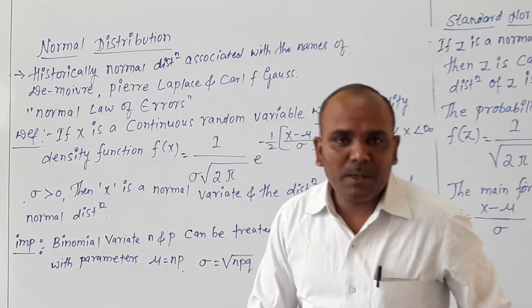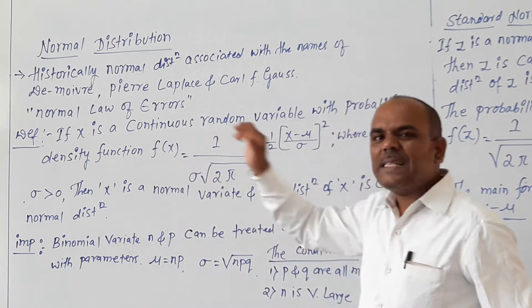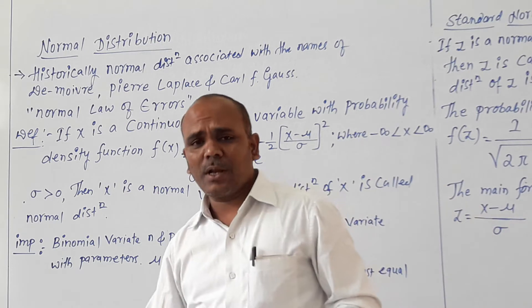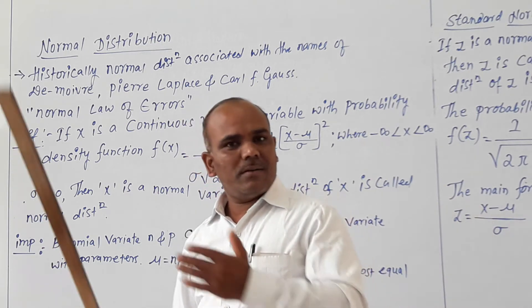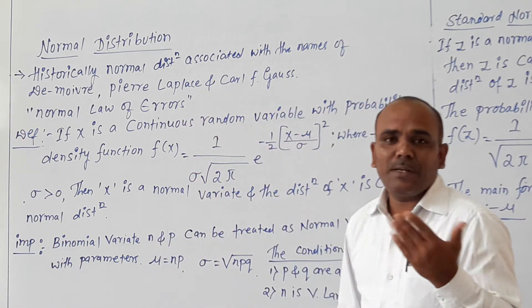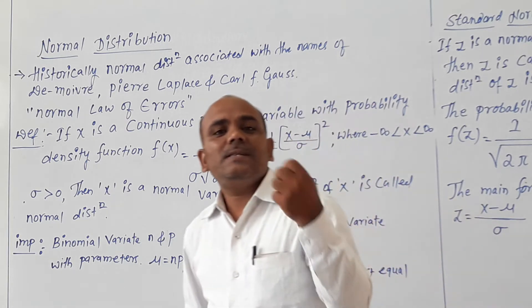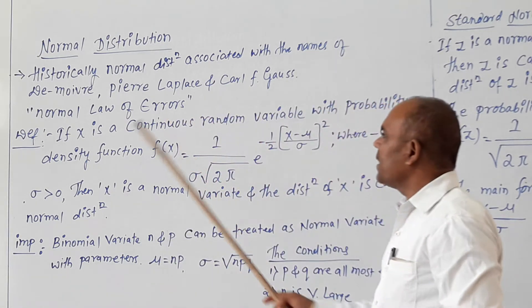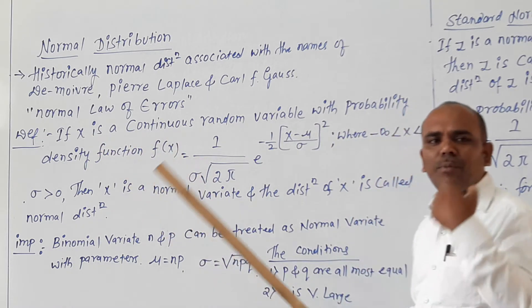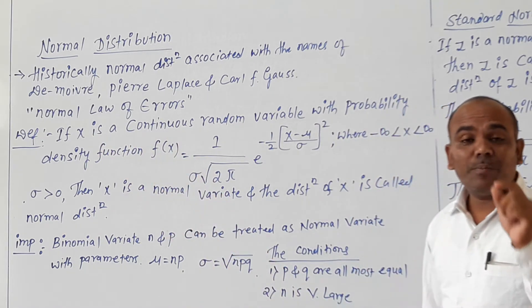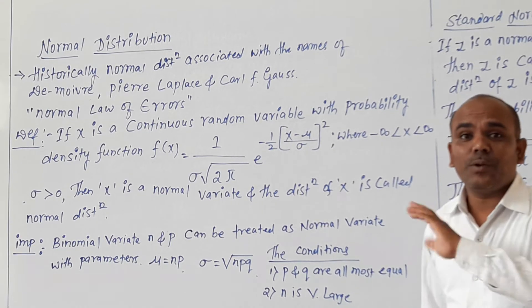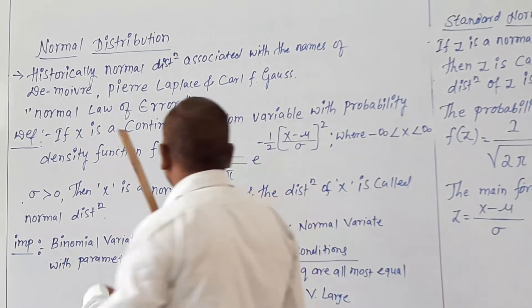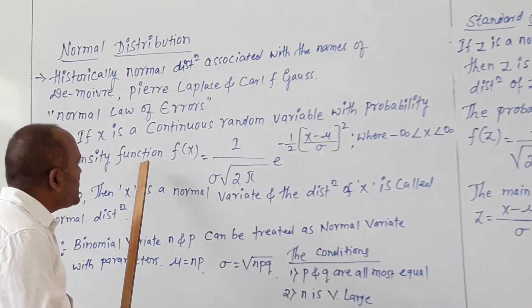What is the definition of Normal distribution? If x is a continuous random variable — before this concept we explained x as a discrete random variable, but here if x is a continuous random variable — then we use the probability density function, not the probability mass function.